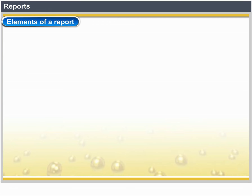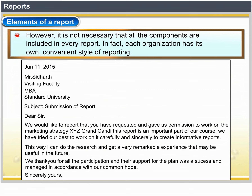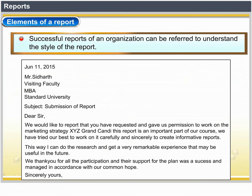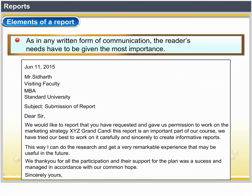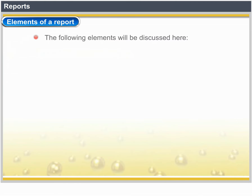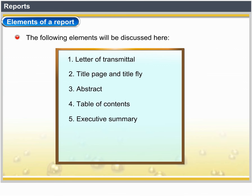Elements of a report. The elements of a report refer to those components usually included in a formal business report. However, it is not necessary that all the components are included in every report — each organization has its own convenient style of reporting. Successful reports of an organization can be referred to in order to understand the style. As in any written form of communication, the reader's needs have to be given the most importance. The following elements will be discussed: 1. Letter of Transmittal, 2. Title Page and Title Fly, 3. Abstract, 4. Table of Contents, 5. Executive Summary, 6. Glossary and List of Symbols, 7. Appendix.